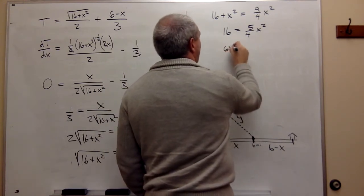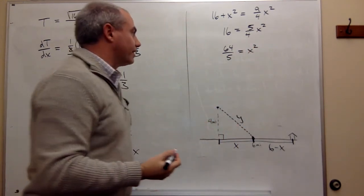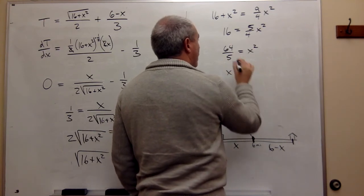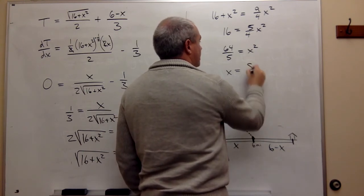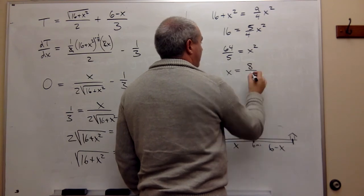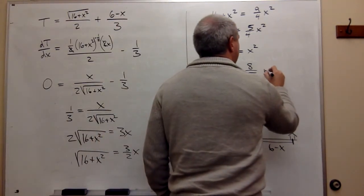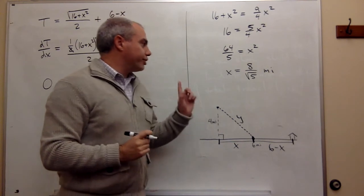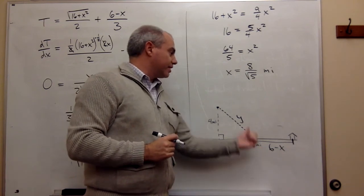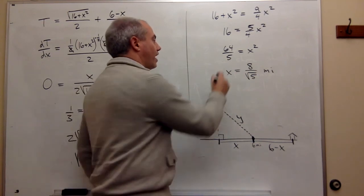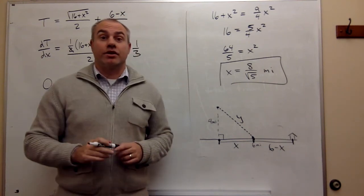Multiplying both sides by 4/5 gives x² = 64/5, so x = √(64/5) = 8/√5 miles. She should row to a point that is 8/√5 miles from the nearest shore point, which gives the shortest total travel time.